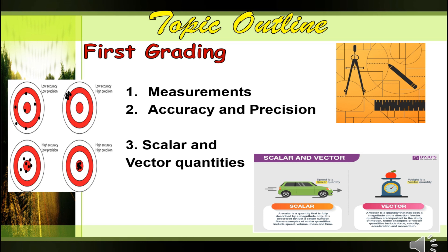For measurements, you are going to learn here the different systems of measurement and also how to convert. For accuracy and precision, I know in your General Chemistry 1 you learned this topic. As a reinforcement, we are going to discuss and recall the formula and differentiate systematic from random error. Thirdly, we have scalar and vector quantities, which are both essential in solving physics problems.